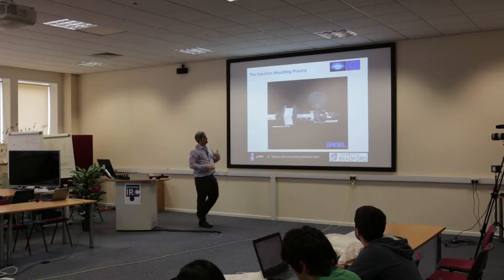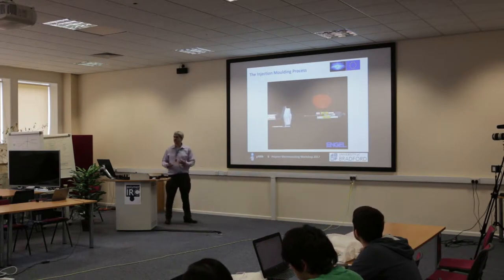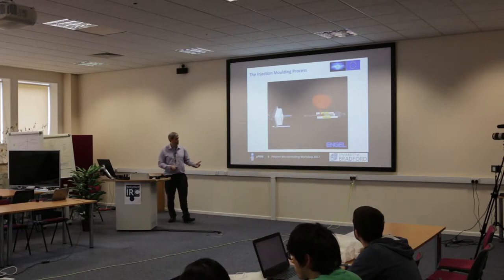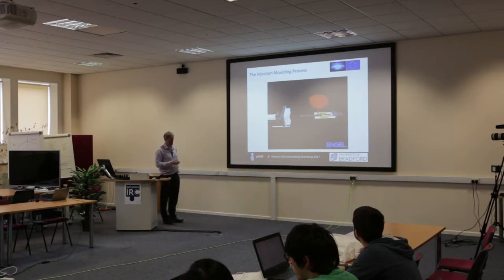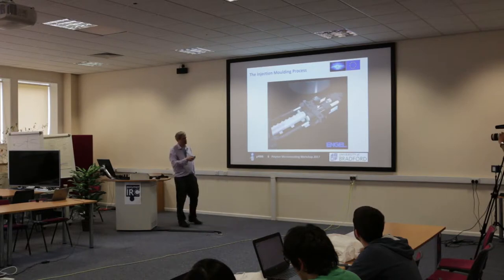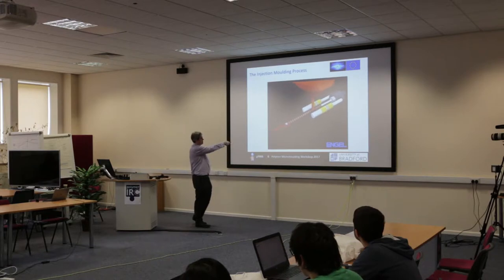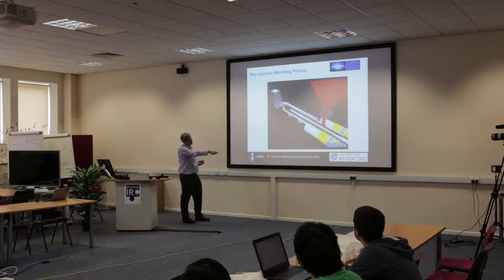The injection side is very similar to the extrusion process — inside the heated barrel we have an extruder screw operating the same way, with a feed zone, a compression zone to convey and melt the material, and a chilled area to prevent feeding problems. The main difference is at the end of the screw there's a check ring valve. The screw is no longer fixed — it moves backwards and forwards to give us the injection stroke. The screw turns as it moves backwards to convey material into the melt reservoir, then moves forward to force material through the nozzle into the cavity.